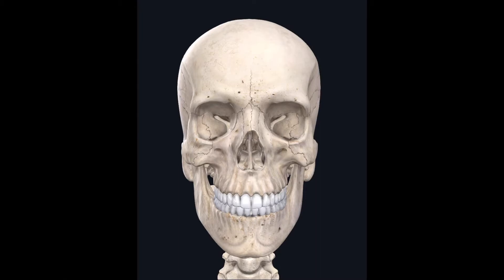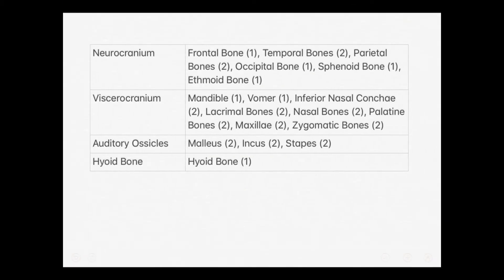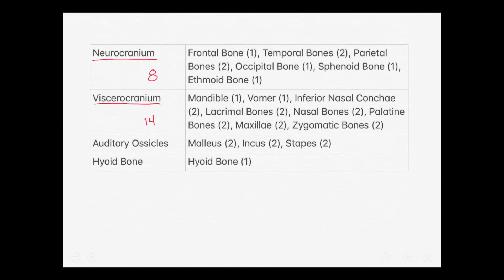Here's a chart with some new vocabulary. The first one is neural cranium — the set of bones that surrounds the brain. You can think of the neural cranium as the brain case, and there are eight bones that make it up. The other bones of the skull fall into the visceral cranium, or the facial bones, which consist of 14 bones.